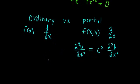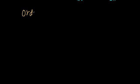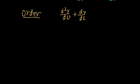The next property of differential equations is that of order. The order of a differential equation is the highest derivative term in that equation. For example, if we have the second derivative of y with respect to time, plus the first derivative of y with respect to time, plus y equals zero — we have a first derivative and a second derivative, so the highest derivative is second order. We say this is a second-order differential equation.